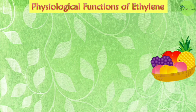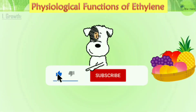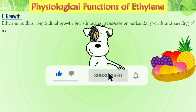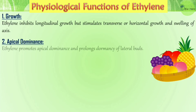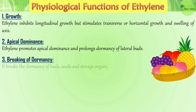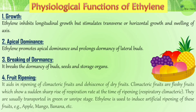The physiological functions of ethylene include: ethylene inhibits longitudinal growth and stimulates transverse or horizontal growth and swelling of the axis. It promotes apical dominance and prolongs dormancy of lateral buds. Ethylene is also important for breaking the dormancy of buds, seeds, and storage organs. Most importantly, ethylene plays a major role in the ripening of climacteric fruits and dehiscence of dry fruits.